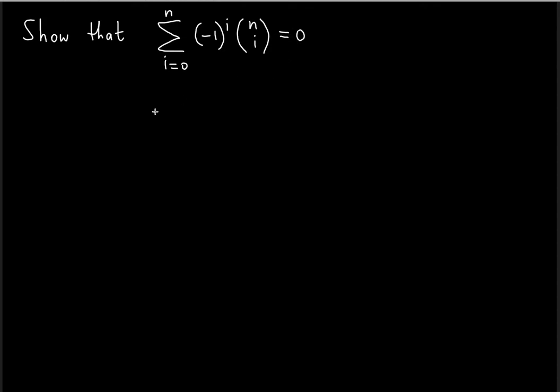Notice that we can actually tweak this sum. We can write this negative one to the i, and then after that we know that it's multiplied by one. Everything is multiplied by one even when you don't see it, so we might as well express one raised to the power of n minus i.